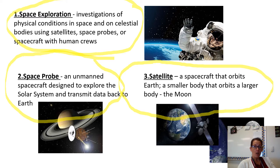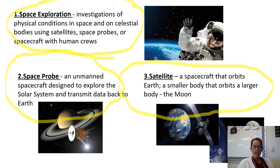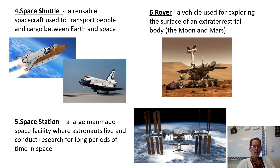Last but not least on this slide, we have satellite — a spacecraft that orbits the Earth, or more broadly, a smaller body that orbits a larger body. A lot of us have satellite TV. There's also a satellite that humans put up there that circles the Earth. But our moon is actually a satellite as well — it's a smaller body that orbits the Earth. Kind of cool, right?